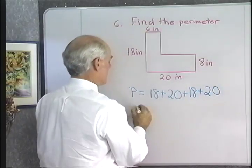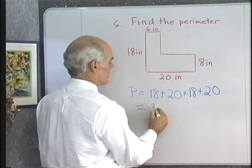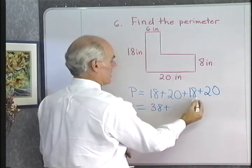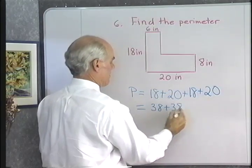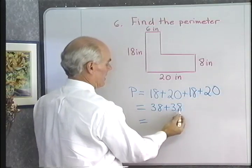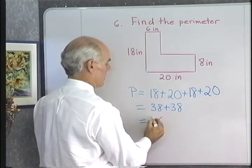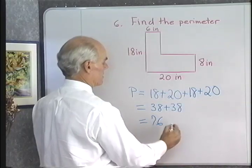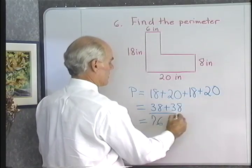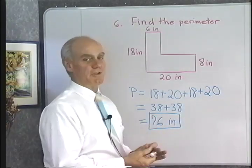So, if I add these numbers up, I'm going to have 18 plus 20, which is 38, plus 18 plus 20, which is 38. I'll add 8 and 8 and get 16, carry the 1, 3 and 3 is 6, and 1 is 7. So, 76 inches is the perimeter of this figure right here.